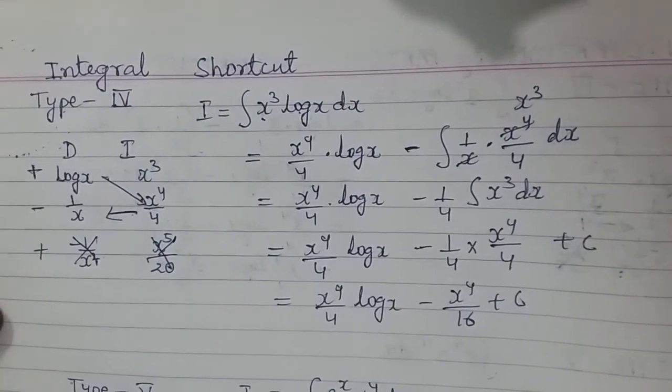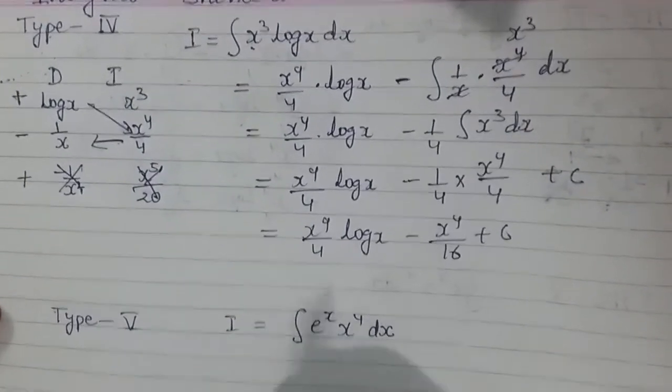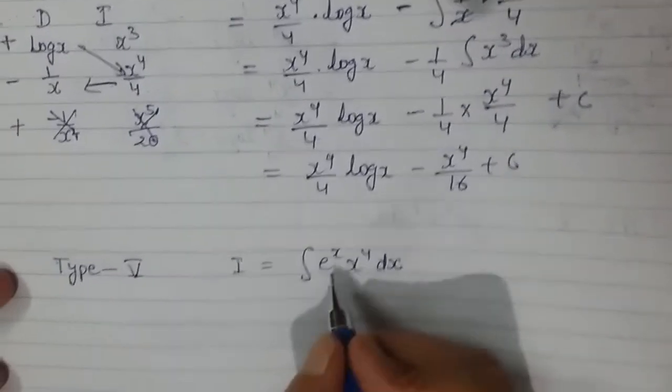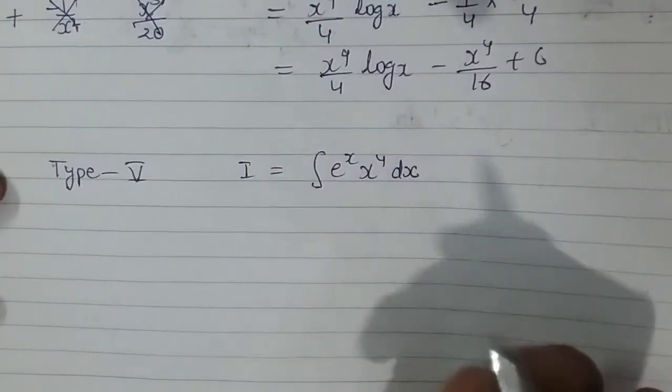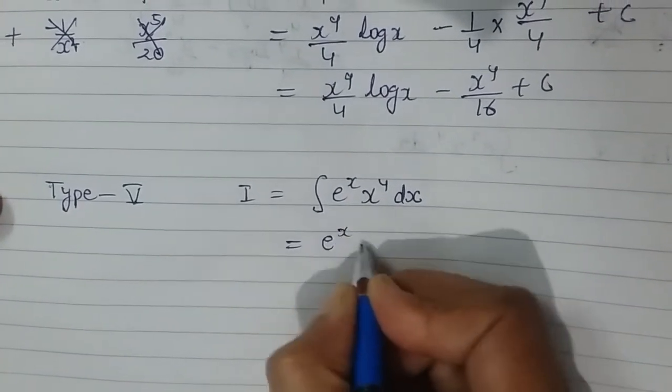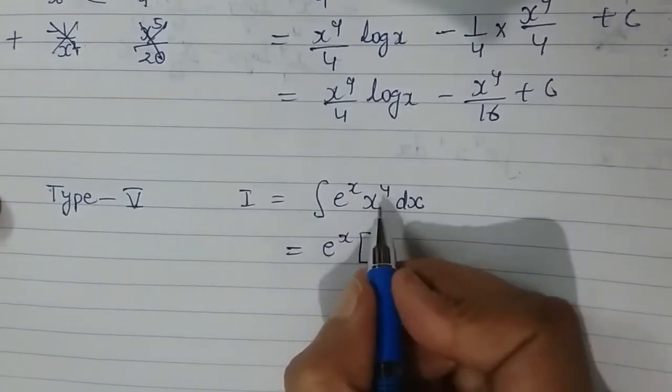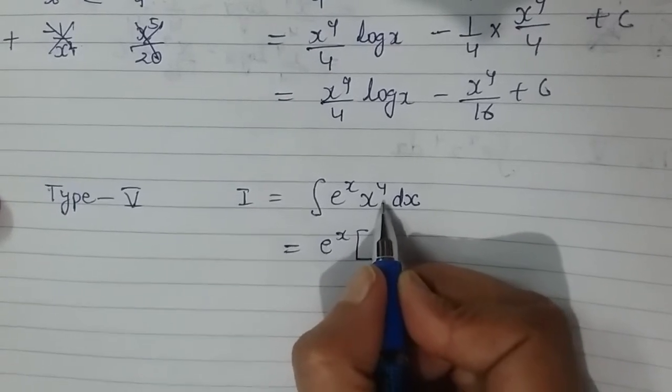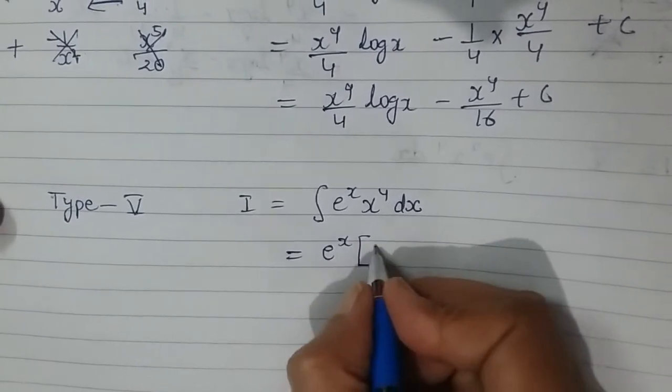Now look at another type of integral: e power x times x power 4 dx. For this, the trick is the value of this integral is I will take e power x outside the bracket, and inside I will keep on differentiating it till I get 0.